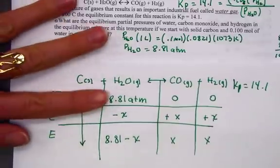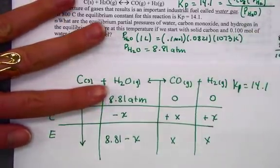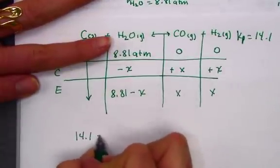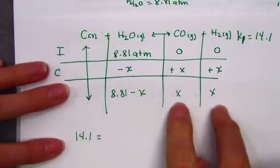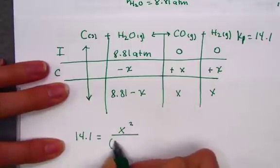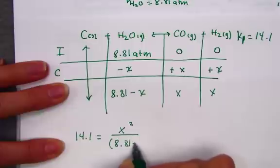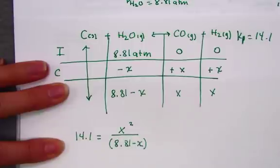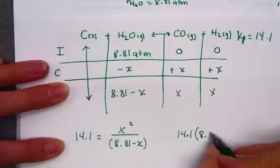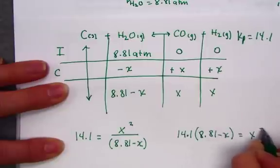Knowing that we can sub that into the Kp expression, Kp was given to us as 14.1 products over reactant. X times x, I'll write as x squared, and on the bottom, 8.81 minus x. We will distribute, 14.1 distributed through 8.81 minus x, set equal to x squared.